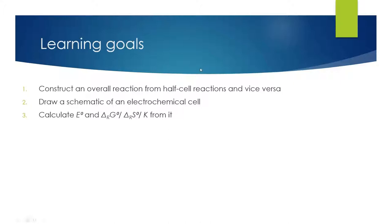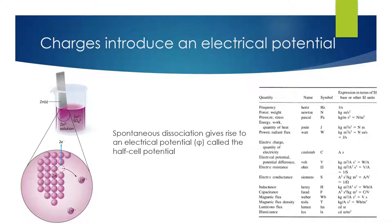We'll start by considering a zinc electrode placed into a zinc sulfate solution. We could write a balanced reaction for the dissociation of zinc metal: zinc metal could dissociate into zinc 2+ ions, losing two electrons. The zinc ions would be soluble in the aqueous solution and the electrons would remain with the zinc metal. Our intuition tells us this process is very unlikely to occur, and indeed the equilibrium constant for this spontaneous dissociation is on the order of 10 to the minus 14 — very unfavorable.